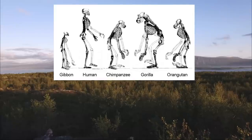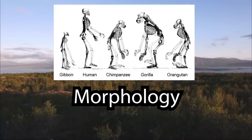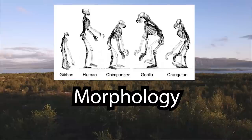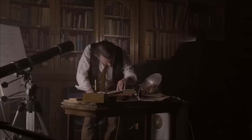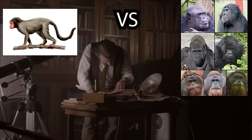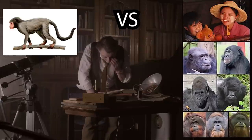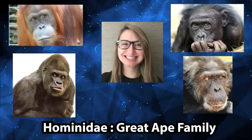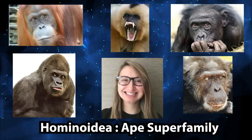Back before the advent of genetics, early taxonomists typically used morphology, or physical characteristics, to group organisms into taxonomic ranks. This was troubling for many early scientists, as the set of physical characteristics that separated living apes, like chimpanzees and gorillas, from the other old world monkeys clearly applied to humans as well, firmly cementing us as members of the ape family Hominidae and the ape superfamily Hominoidea.